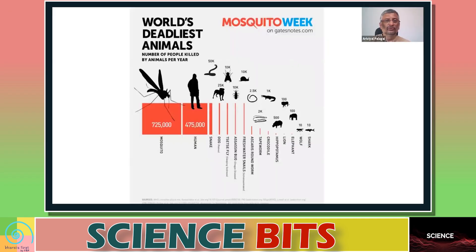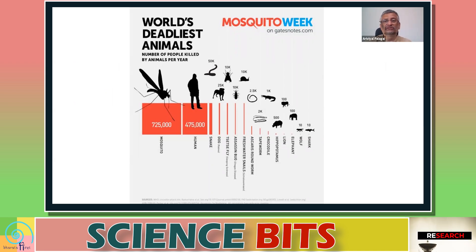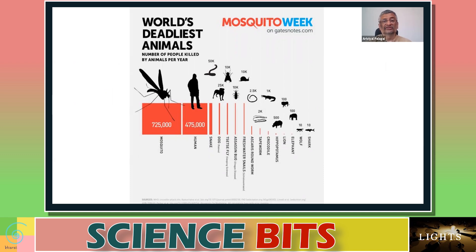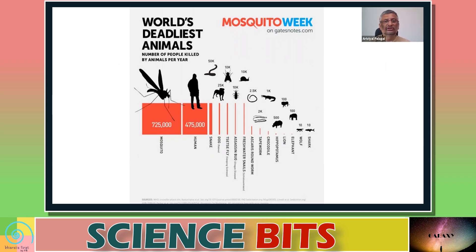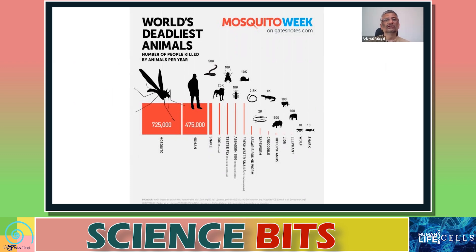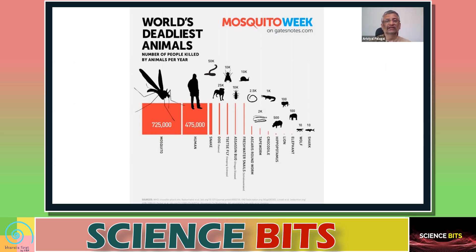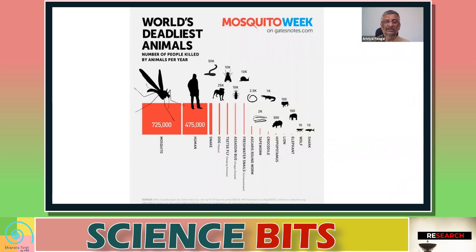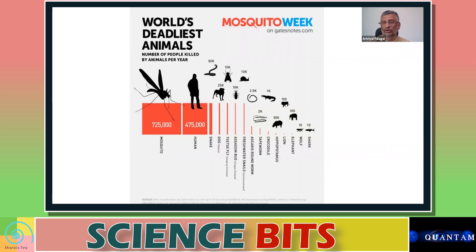If you look at the world's deadliest animal, many of us might think it is a shark or snakes, but that's not correct. The world's deadliest animal is the mosquito. One estimate says that roughly around seven lakh twenty-five thousand people every year die because of mosquito-borne diseases.